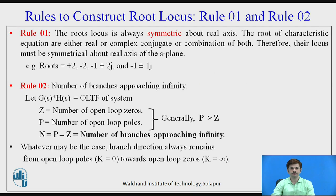Rules to construct root locus. Rule 1: The root locus is always symmetric about the real axis. The roots of the characteristic equation are either real, complex, or a combination of both. Therefore, their locus must be symmetric about the real axis of the s-plane. The roots which are real can be plus or minus two. The roots which are complex can be minus one plus two j, and the roots which are complex conjugate can be minus one plus or minus one j.